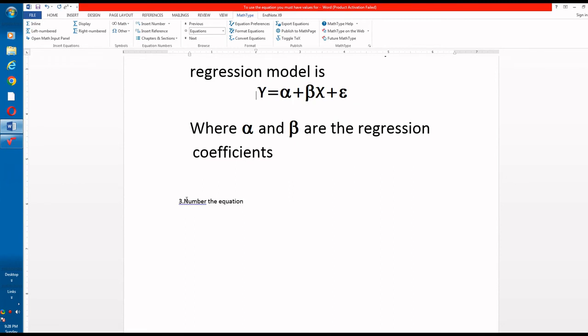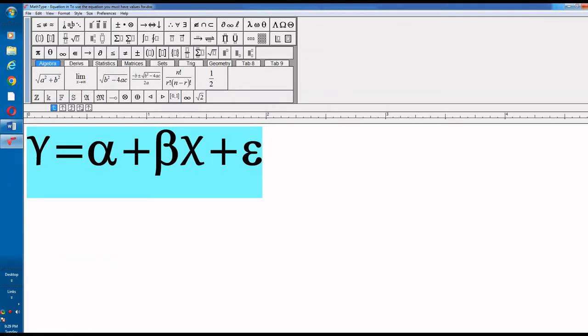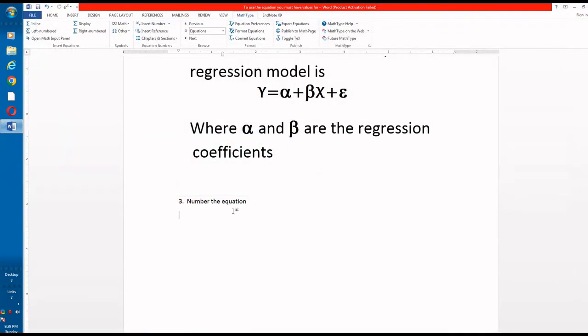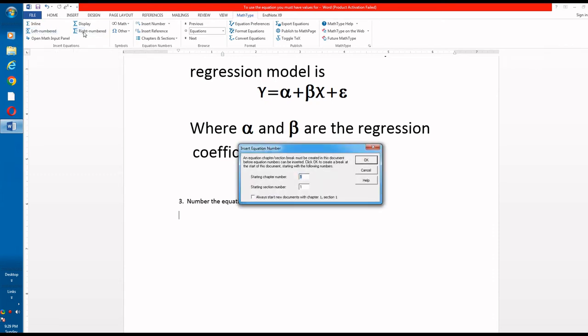So at third step, number the equation. If you want to give number to your equation, then use right numbered. Because we number equation on the right side, so right number. If you want to number equation on left side, use left number.